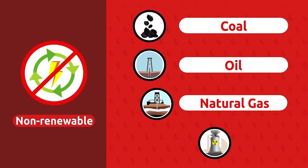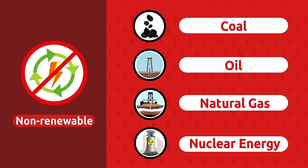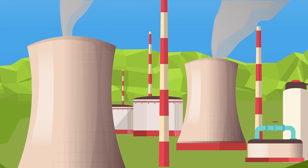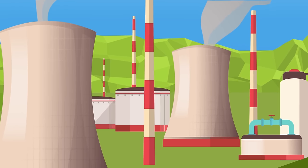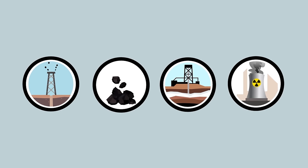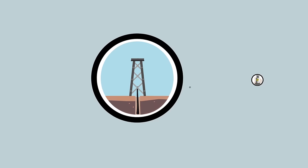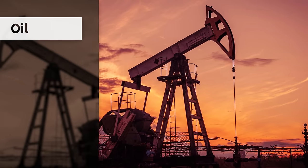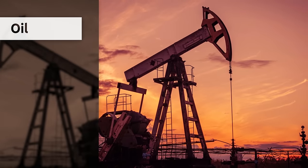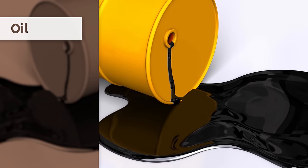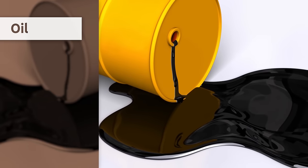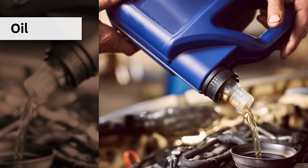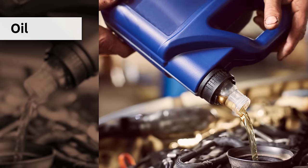Coal, oil, natural gas, and nuclear energy are examples of non-renewable energy sources. In nature there are limited resources of this type, which is why they may run out with use. Oil is found under the earth's surface — it's a liquid substance formed by a mixture of hydrocarbons with a strong smell and dark color. Oil is used to produce fuels like gasoline or gas oil, which we use to power the engines of vehicles.